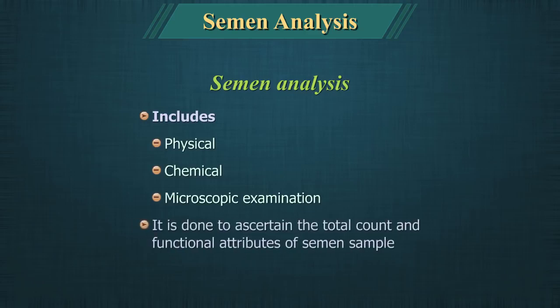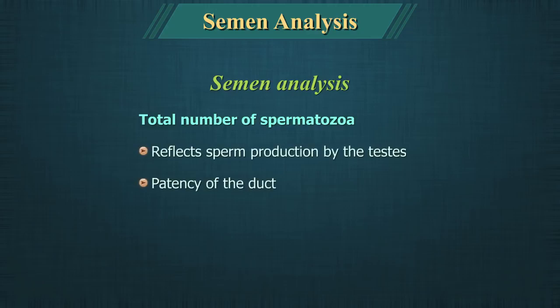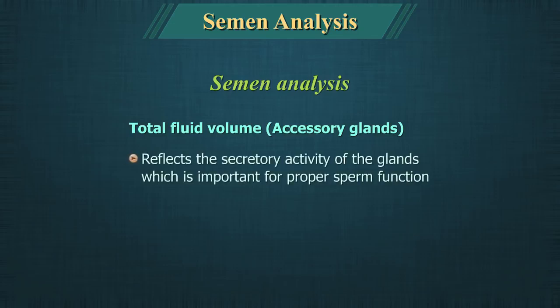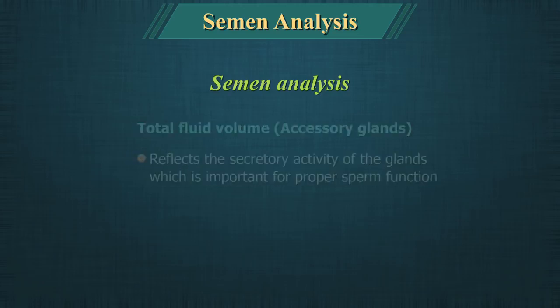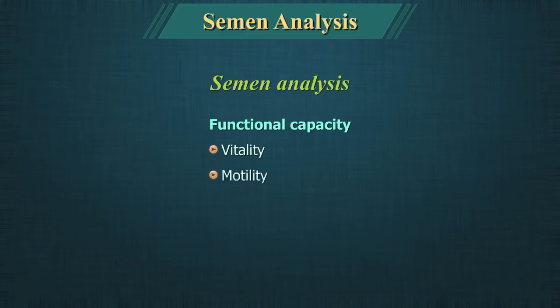Semen analysis is done to ascertain the total count and functional attributes of a semen sample. The total number of spermatozoa reflects sperm production by the testes and the patency of the post-testicular duct system. Total fluid volume contributed by the various accessory glands reflects their secretory activity, which is important for proper sperm function. The functional capacity of the spermatozoa is assessed by their vitality, motility and morphology.